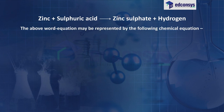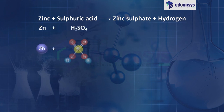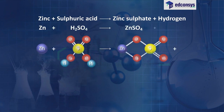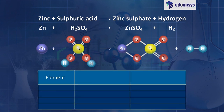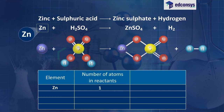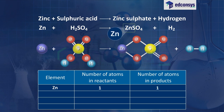The above word equation may be represented by the following chemical equation: Zn + H₂SO₄ → ZnSO₄ + H₂. Let us examine the number of atoms of different elements on both sides of the arrow. Element Zn: number of atoms in reactants = 1, number of atoms in products = 1.